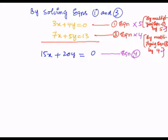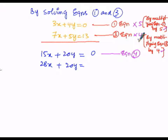Next, the third equation must be multiplied with 4. 4 into 7 is 28x, plus 4 into 5 is 20y, equals to 4 into 13, which is 52. Let us consider this as equation number 5.